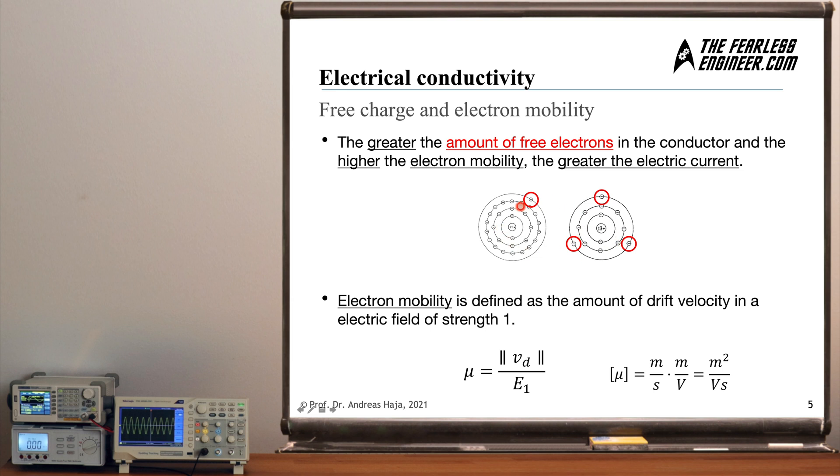And here you can see two models of metallic atoms. This is a copper atom with 29 protons in the core and an equal number of electrons on the various orbits surrounding the core. And the outermost one here in the red circle is called the valence electron, which I already talked about a few minutes ago. And this one is free to move as soon as the copper electrons of the wire arrange themselves in a lattice structure. And this very, very dense structure frees up the outermost electrons, the valence electrons.